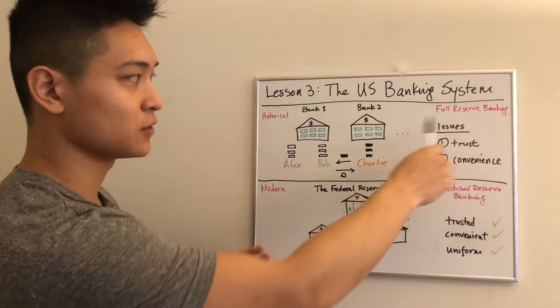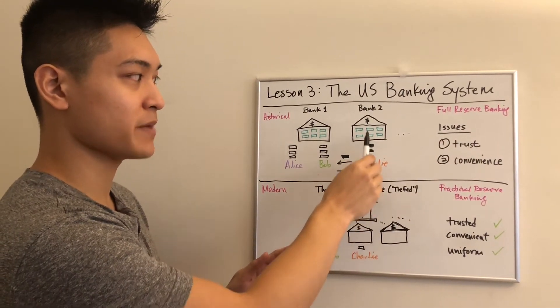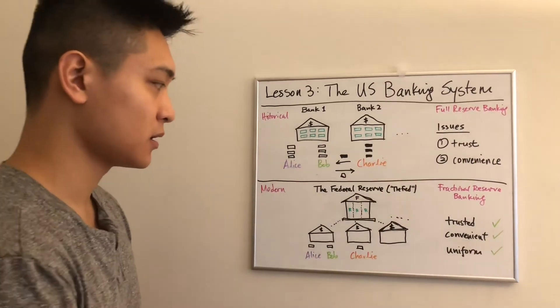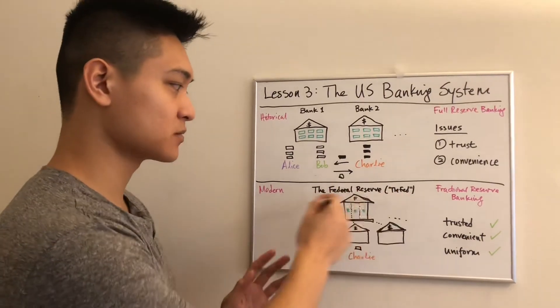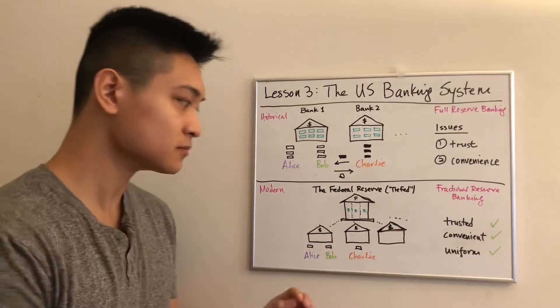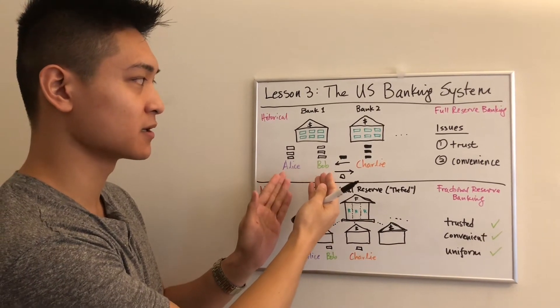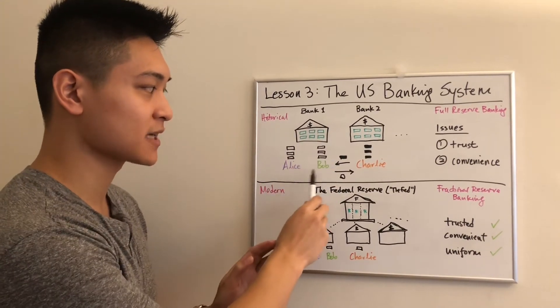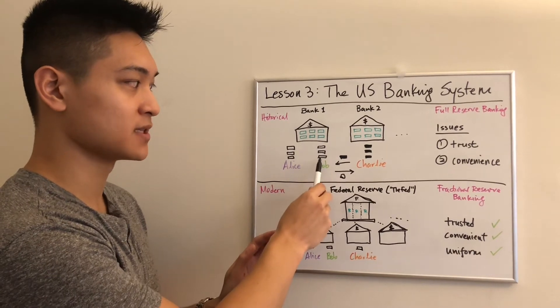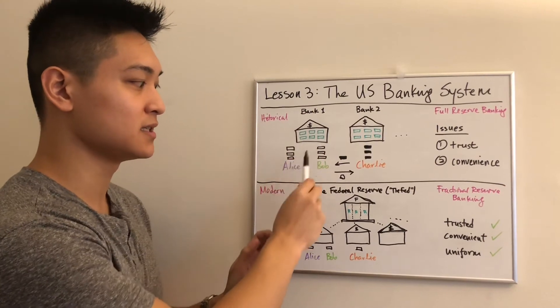Here, full reserve just means every money paper is backed one for one with gold, a physical asset. Now, the federal reserve is really what we call a bank's bank. We're trying to mimic what Alice and Bob experienced here with their bank one, where they were able to transact freely and without issues, all because they were all trading with the same uniform currency and all within the same bank, so it was very easy to move.